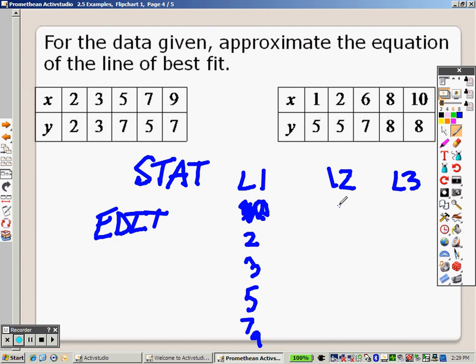Then plug in your y's in this column. Your y's are 2, 3, 7, 5, and 7. Once they're all in your lists, press SECOND and MODE. That's what gets you back to the main screen. Once you're back to the main screen and you've typed all that in, here's what you need to do.